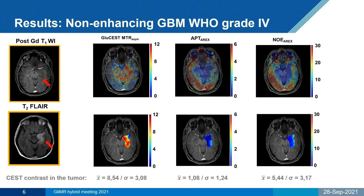Our results from a non-enhancing glioblastoma, which can be seen on the post-gadolinium T1, showed an increase in glutamate-weighted CEST contrast in the tumor lesion, and this can be clearly observed on the lower image where the CEST contrast is shown for the tumor lesion only. On the other hand, we saw a decrease for APT CEST contrast as well as for the NOE CEST contrast, and this again can be seen clearly for the tumor lesion on the bottom row.